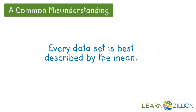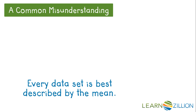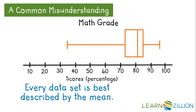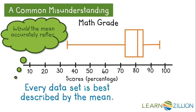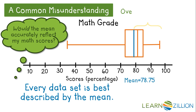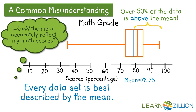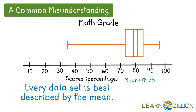A common misunderstanding is that the mean is always the best statistic to use to describe a set of data. Here is a box plot representing my grades in math. Would the mean accurately reflect my math scores? The mean is not a part of a box plot; however, I have chosen to show you a box plot so that you can see where the mean lies in terms of the rest of the data. We see that the mean of 78.75 falls below the median, which means over 50% of the data is located above the mean. Over half my scores are better than the mean, so to summarize my grade as a 78.75 would be under-representing it.